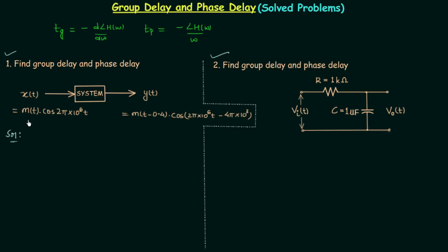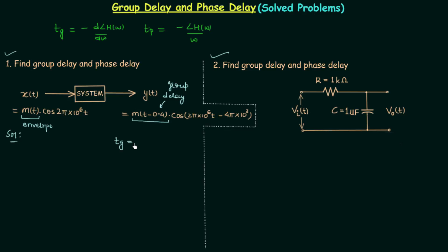If you remember from the last lecture, m(t) here is the envelope — it is the envelope or group of frequencies — and the delay provided to this envelope by the system is known as the group delay. So if you see the output, you will find m(t) is now m(t − 0.4), so this 0.4 is the delay. As it is the delay in m(t), which is the envelope, we call it the group delay. Simply, the group delay t_g is equal to 0.4 seconds.